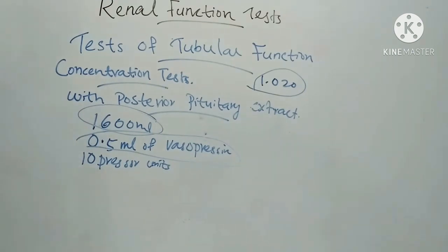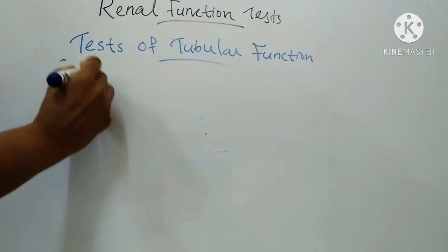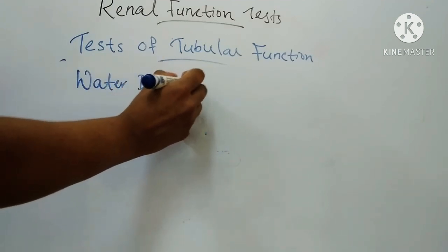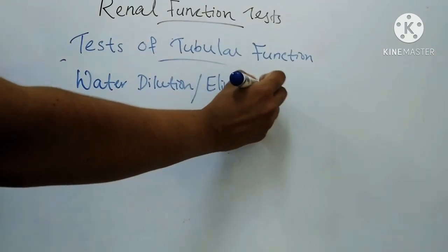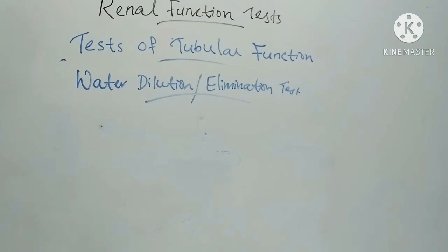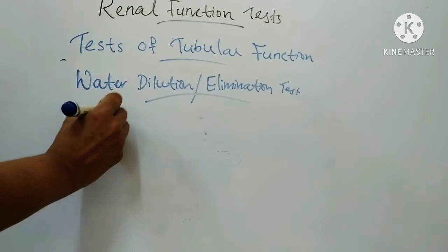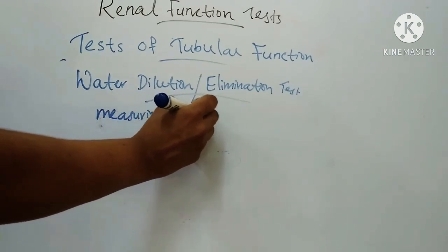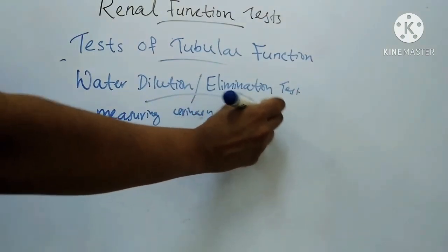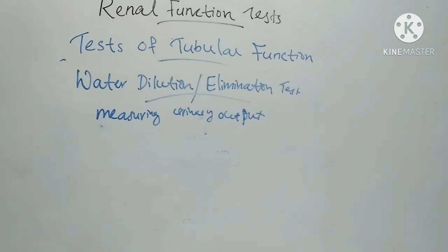Next is the water dilution or elimination test. Here, the ability of the kidneys to eliminate water is tested by measuring the urinary output after ingesting a large volume of water. The patient remains in bed throughout the test because elimination of water is maximum in the horizontal position.